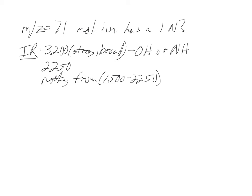There's a peak at 2250 — that should be telling you nitrile or alkyne. And they're telling us there's nothing from 1500 to 2250, meaning no C=C alkenes and no C=O carbonyls. No double bond region at all. We don't know which it is yet, but we wrote it down — the NMR is going to help us figure out the remaining pieces.